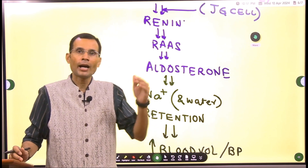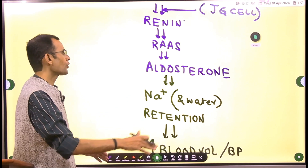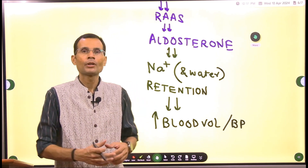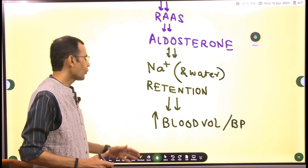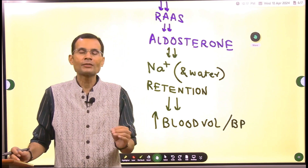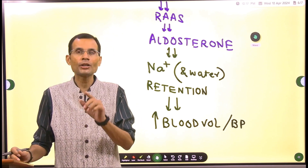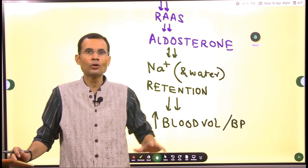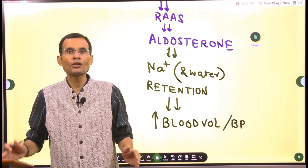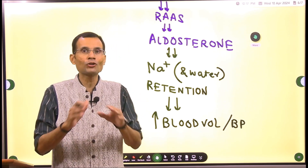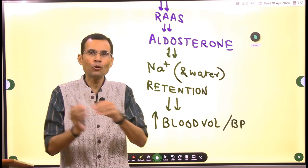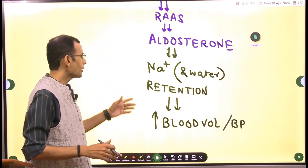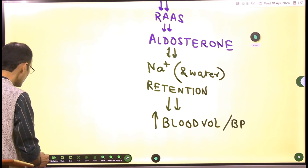ADH causes water movement exclusively; aldosterone causes sodium movement exclusively, and sodium causes water to follow. So sodium and water are reabsorbed — sodium holds that water in the plasma, plasma volume expands, and blood pressure increases. Although sodium is the major determinant of plasma osmolality, aldosterone does not impact osmolality because when aldosterone causes sodium movement, water follows proportionally, so osmolality does not change. Aldosterone regulates blood volume and blood pressure, not osmolality.